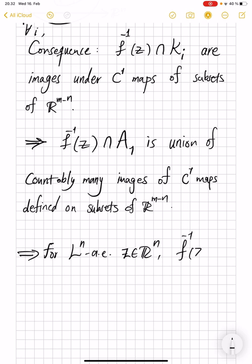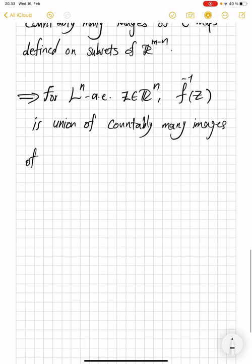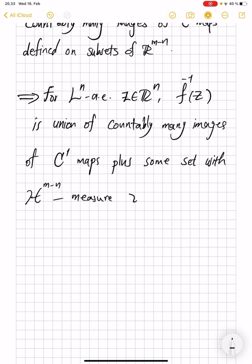f inverse of z intersection with R^m, so all of this set, is union of countably many images of C^1 maps plus some set with H^{m-n} measure 0.